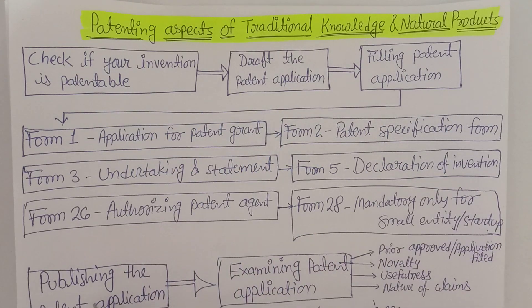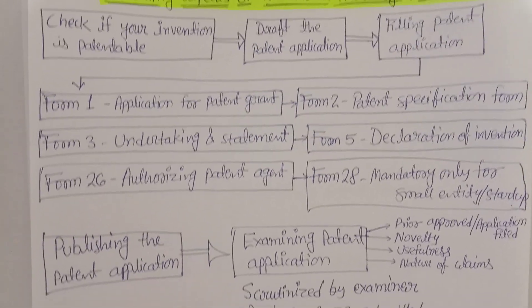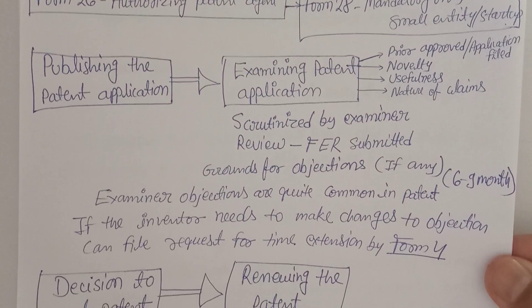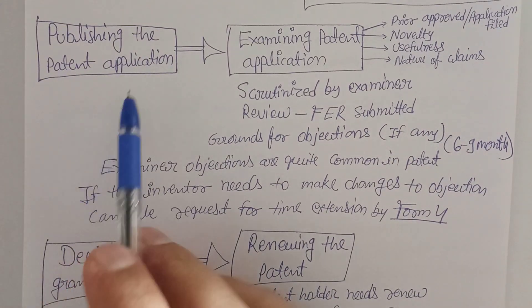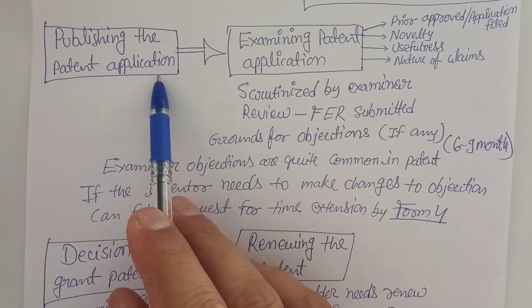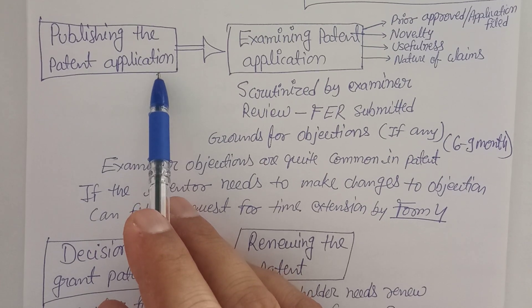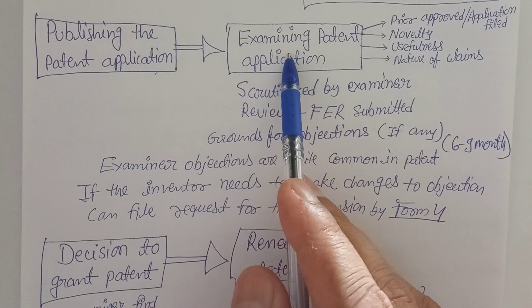After completing steps one, two, and three, the fourth step is publishing the patent application. Once you fill all the forms, you go to step four. The patent office where you have filed the patent will publish your information in the patent publication, and it will go into the public domain.